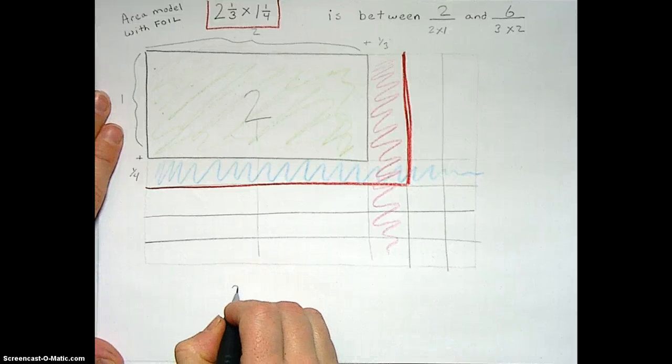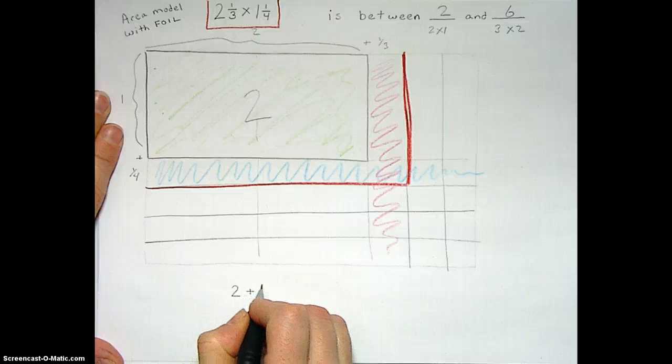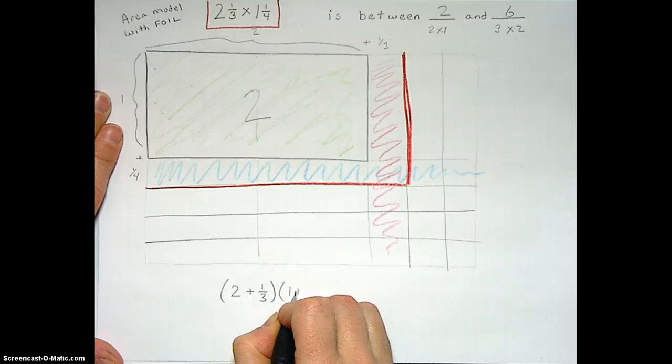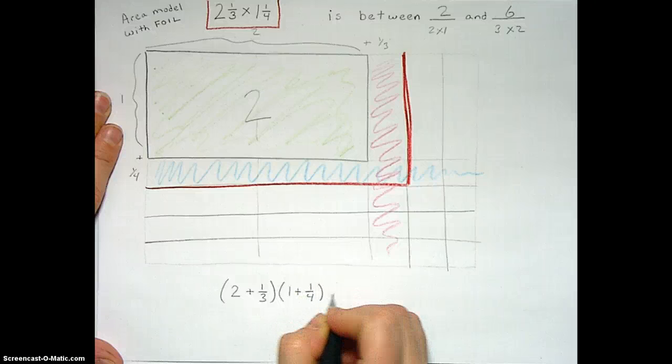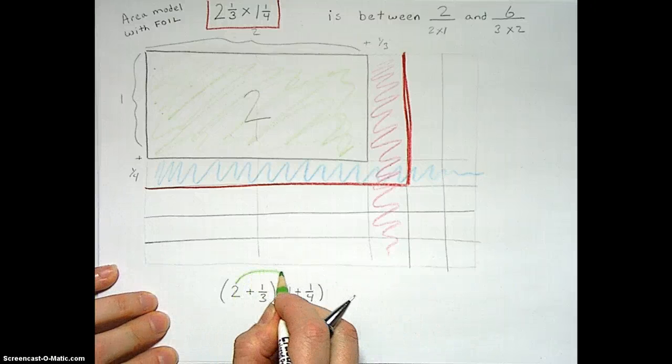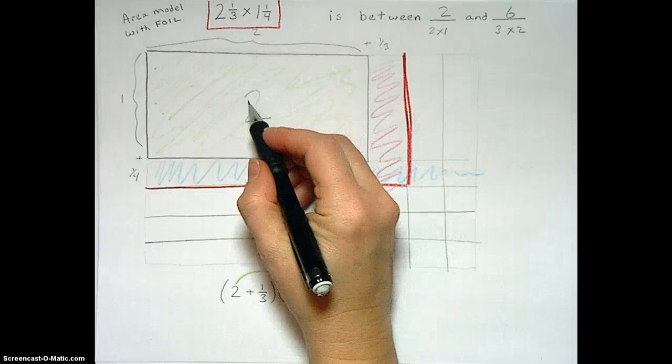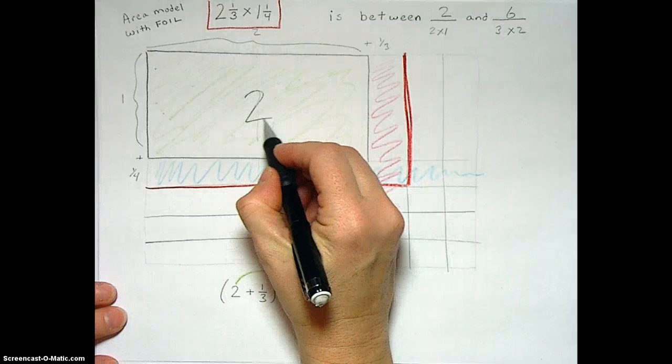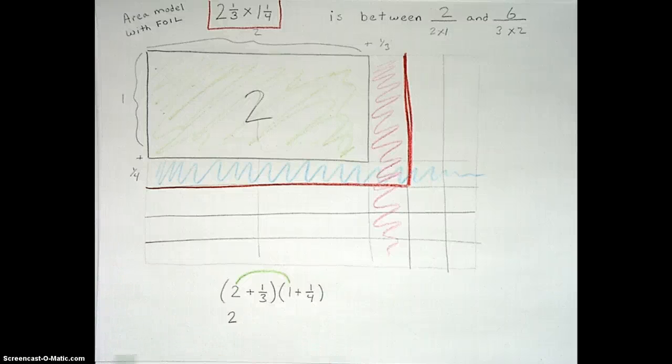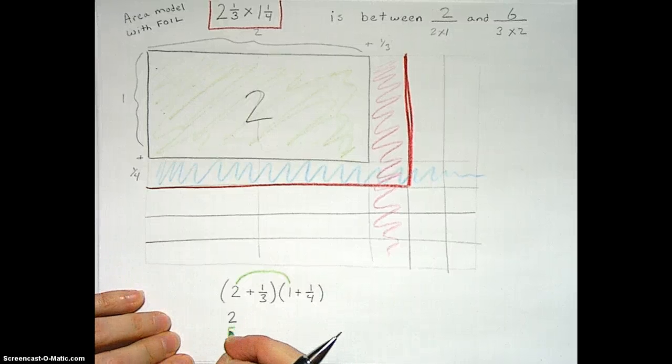So this was 2 and 1/3. Instead of writing it as mixed numbers, we're writing it as the product so that we can use foil to get our partial products. 1 and 1/4. Let's look at each piece. First, we're going to look at the 2 times 1, which gave us this area of 2 here. So we can write that down here for the F part of our foil: first, outer, inner, last.